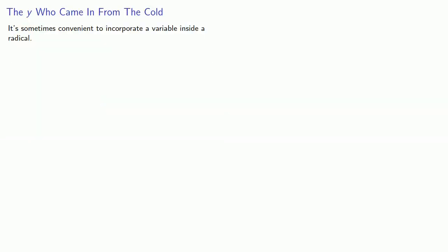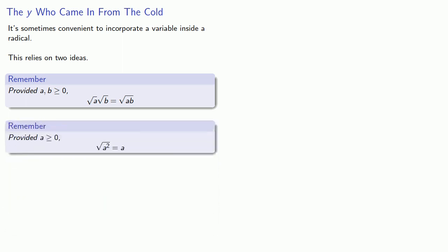It's sometimes convenient to incorporate a variable inside a radical. Our ability to do this relies on two ideas. Provided that a and b are greater than or equal to zero, then the product of the square roots is the square root of the product. And also, provided that a is greater than or equal to zero, the square root of a squared is equal to a. And remember, equals means replaceable, and so these can work in both directions.